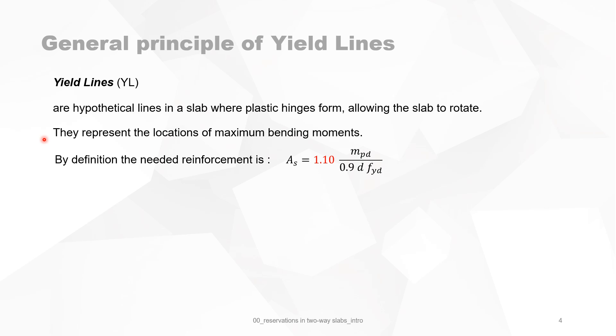By definition, the needed reinforcement is As = 1.10 * (mmax / (0.9 * d * fyd)). But we add 10% security to this amount of steel, so all steel is yielding.